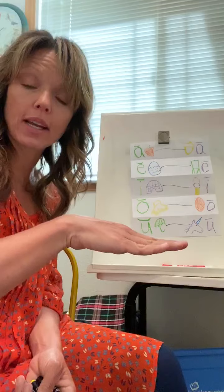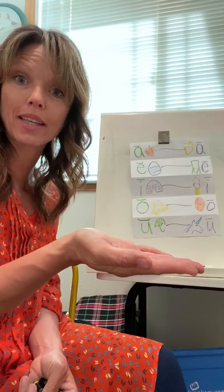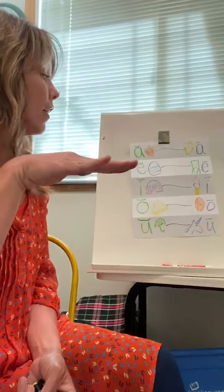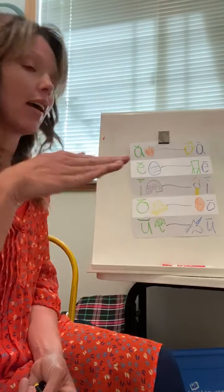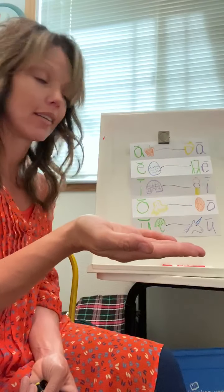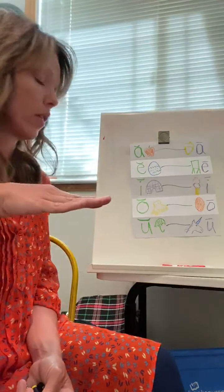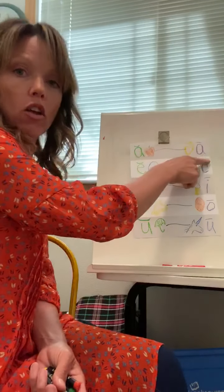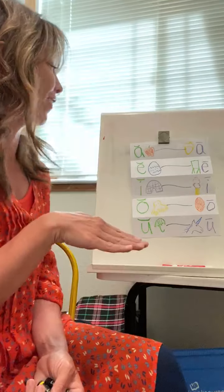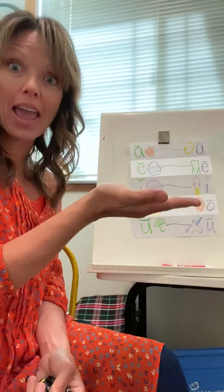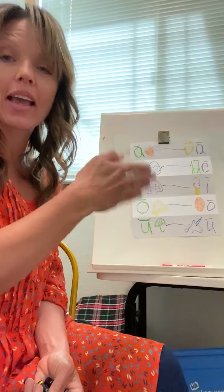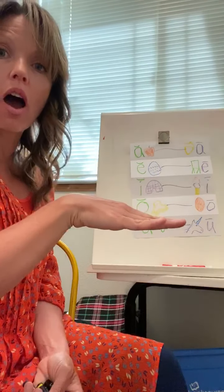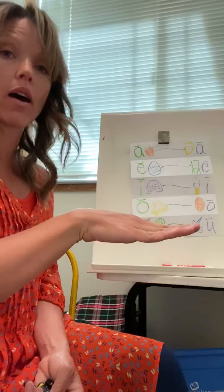Now put your hand out. We're going to say all of the sounds — first the short sound, then we're going to flip to the long sound. Ready? Here we go. A — ay. E — ee. I — I. O — o. U — u. Good work!